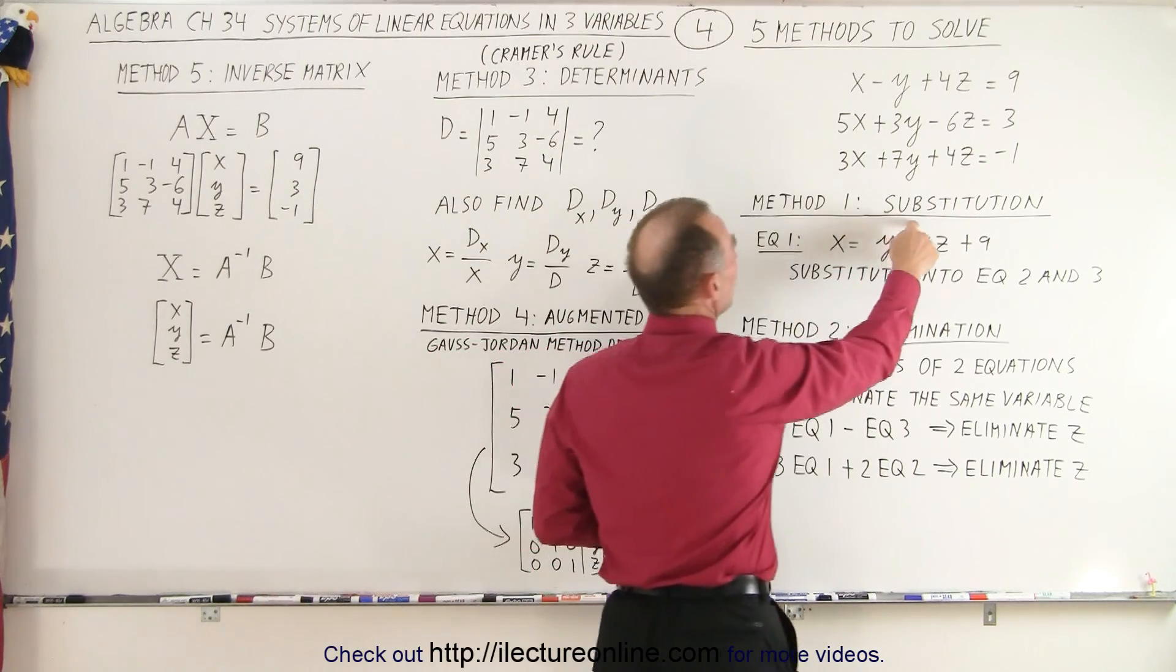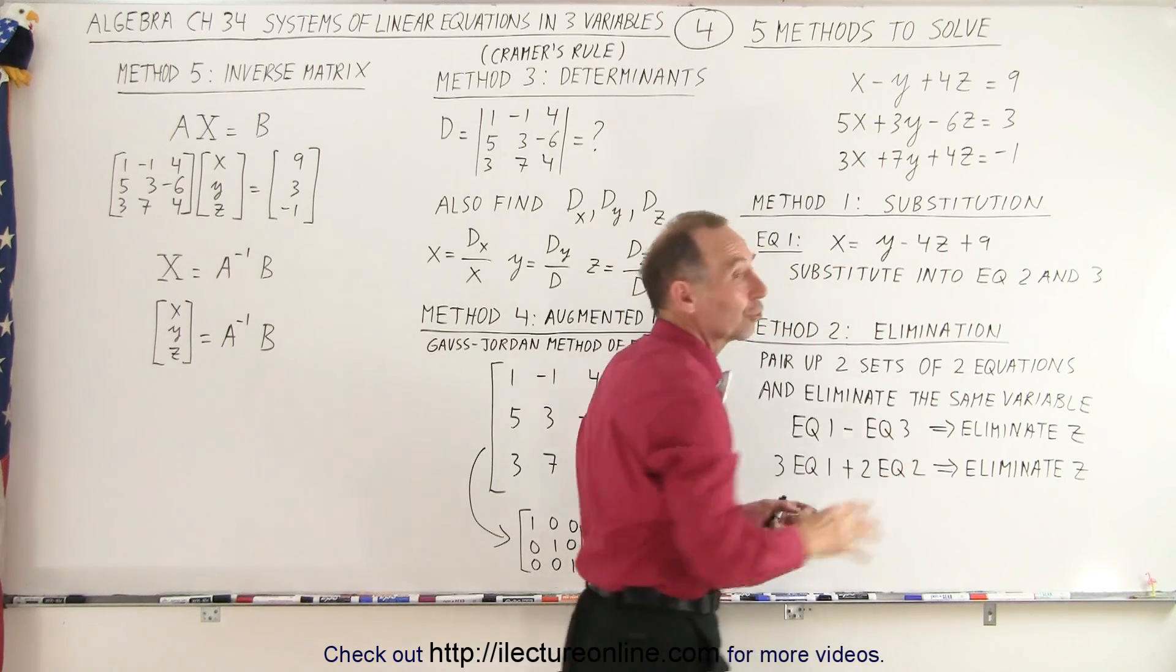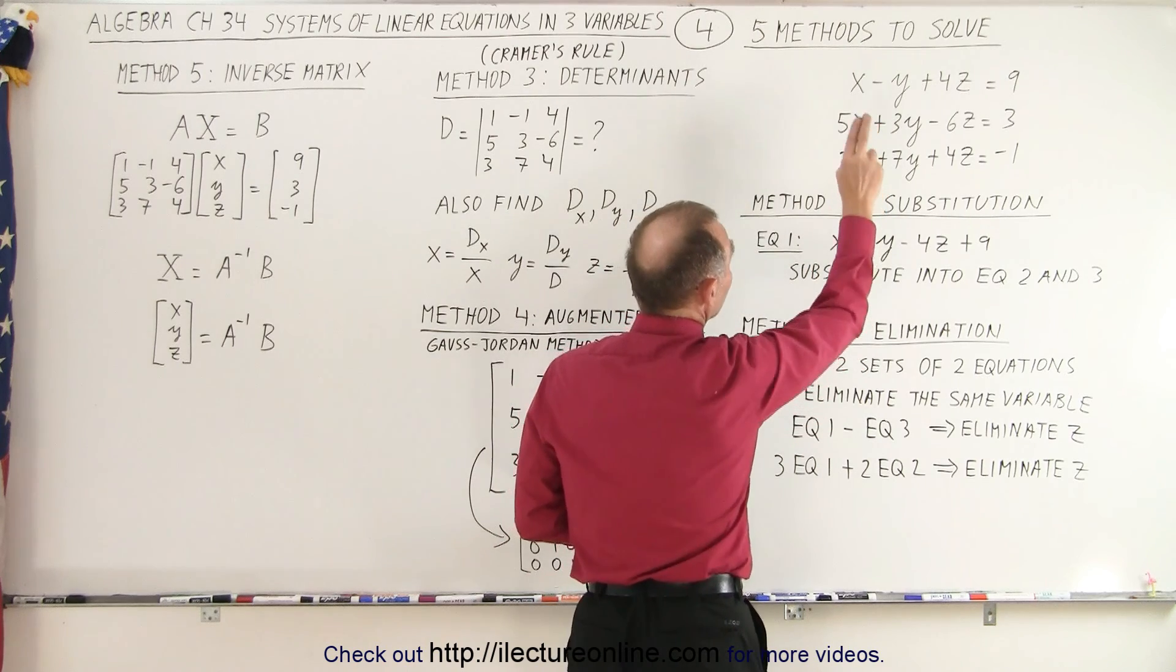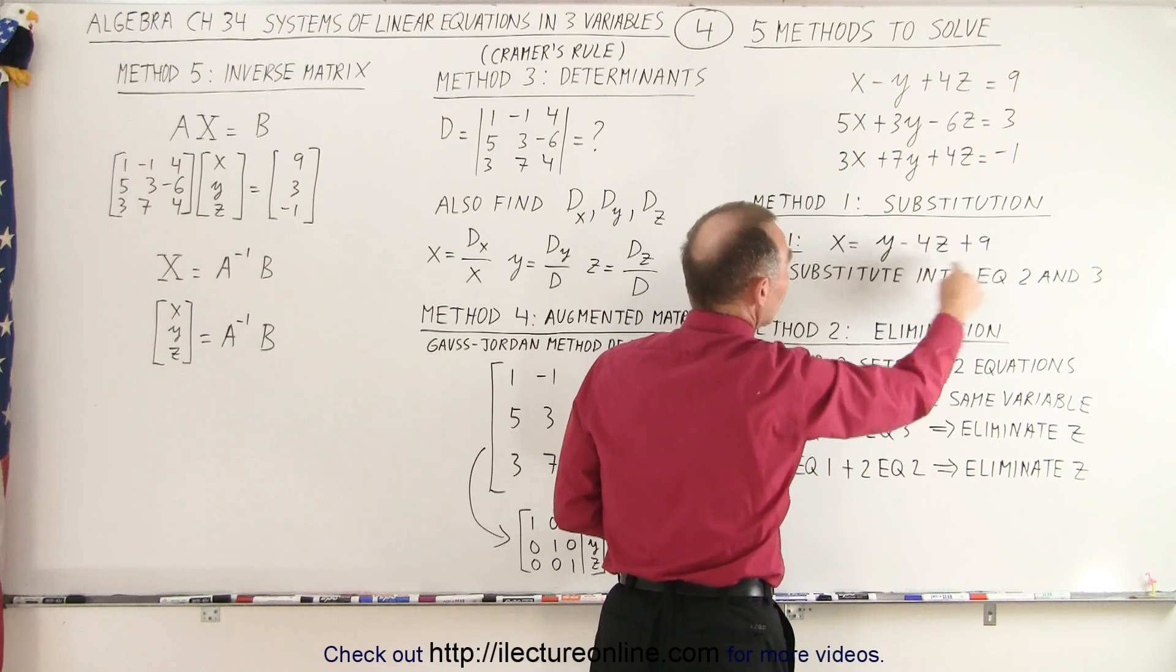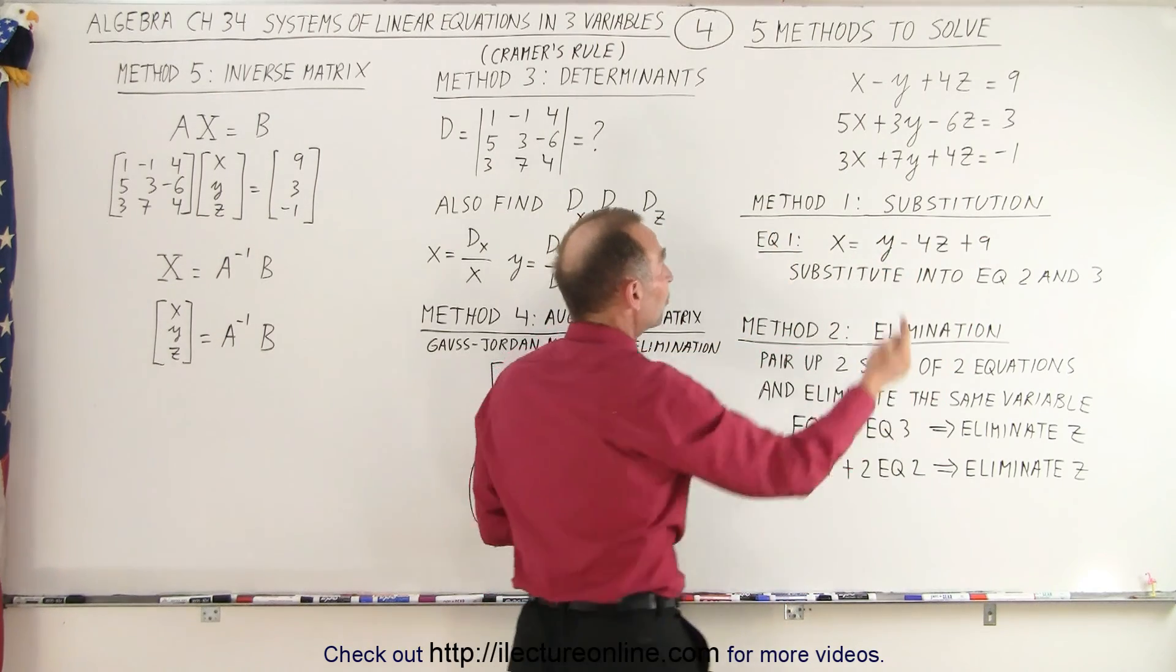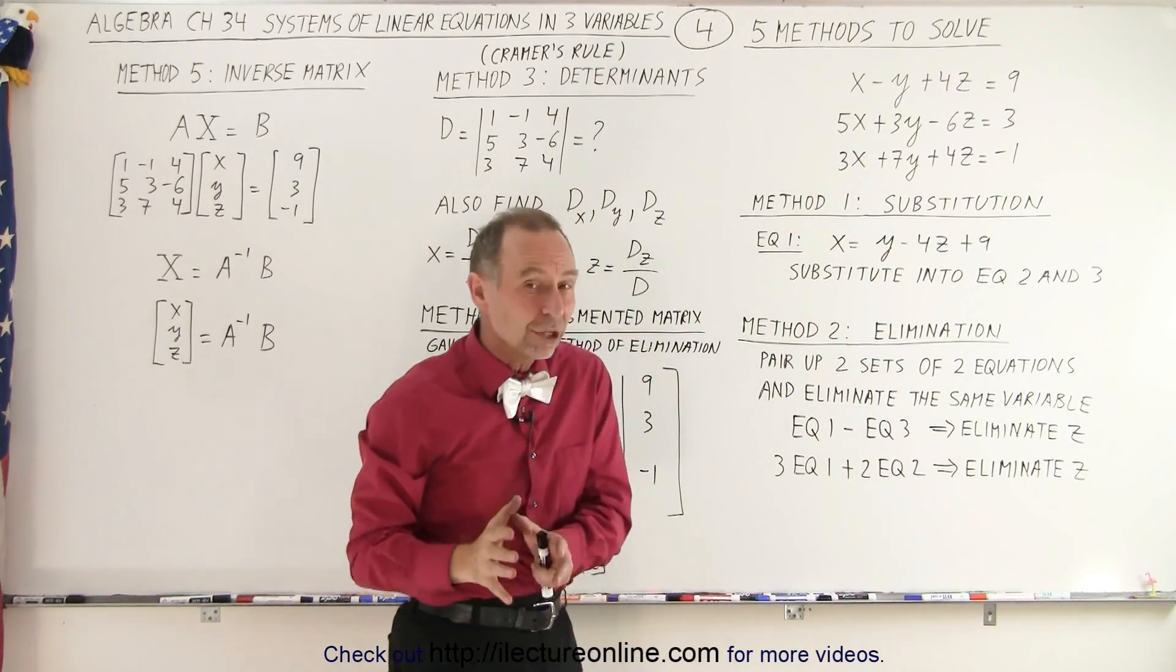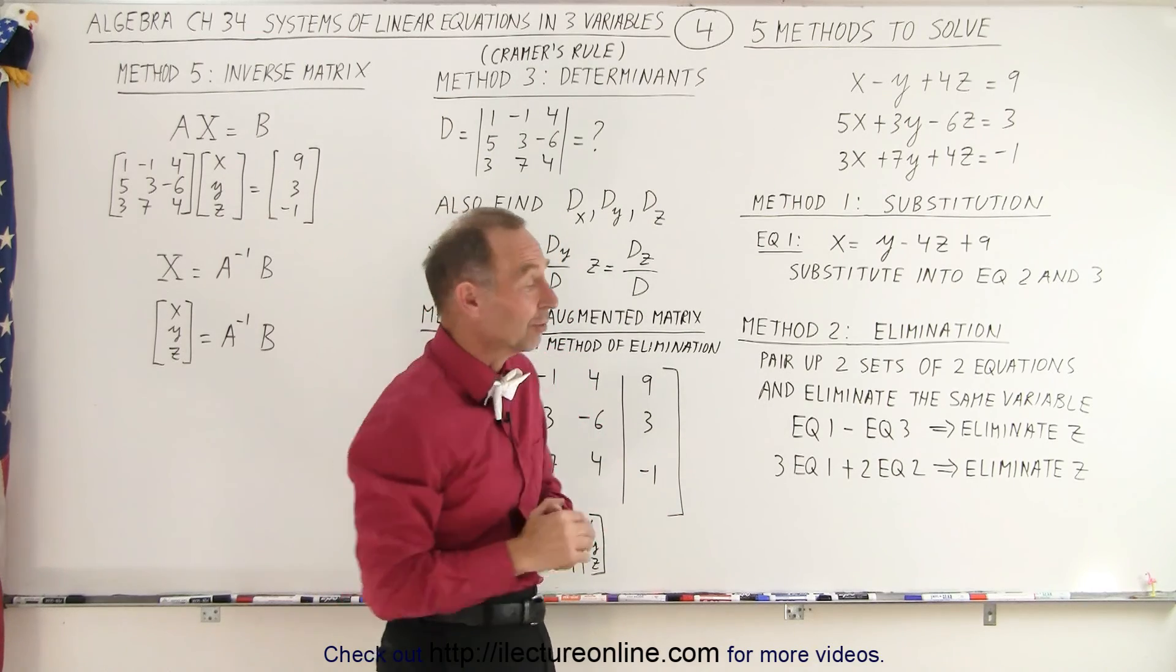Notice when we use the substitution method, we want to take one of the equations and solve it for one of the variables in terms of the other two. So we take the first equation and solve that one for x by moving minus y and plus 4z to the other side. So now we have this one equation where x is in terms of the other two variables. And then we substitute that in the other two equations. And doing that, we'll eliminate one of the unknowns and you'll end up with two equations and two unknowns. And we already know how to solve that.